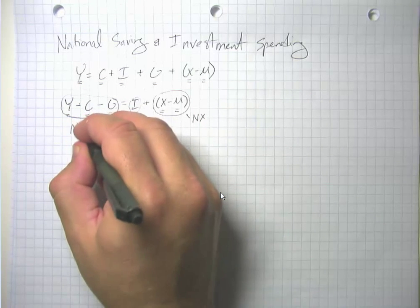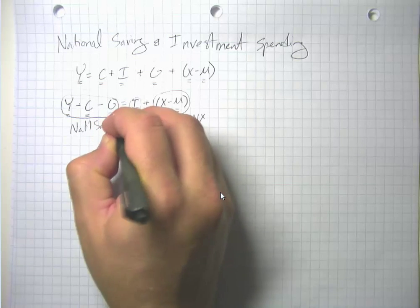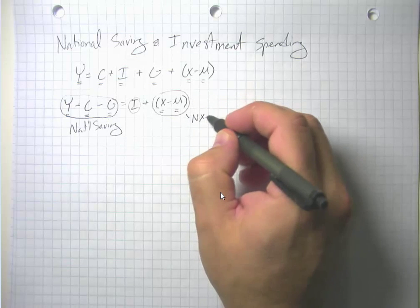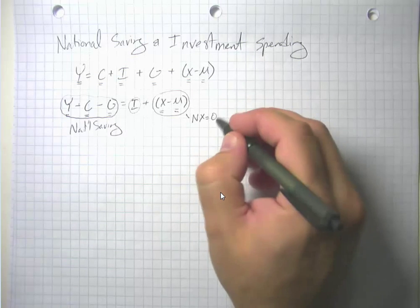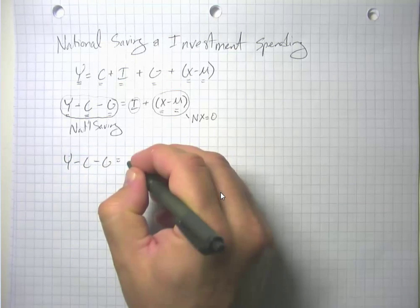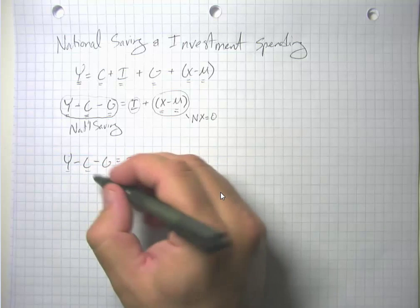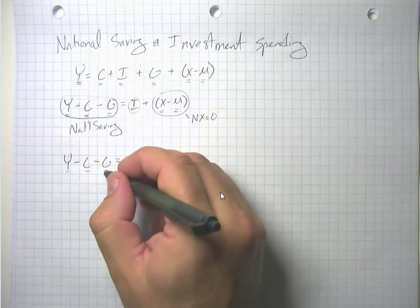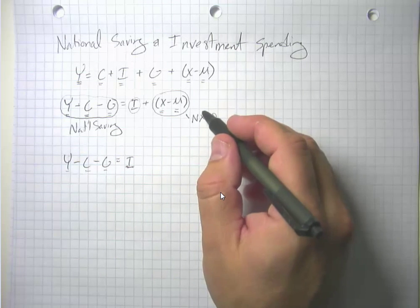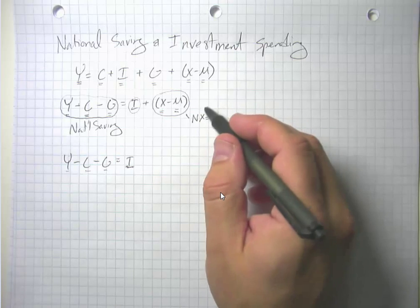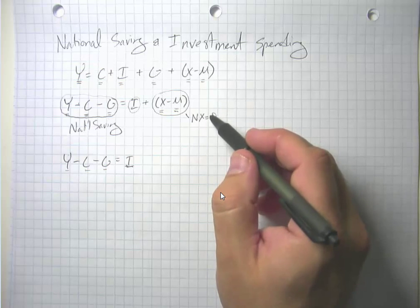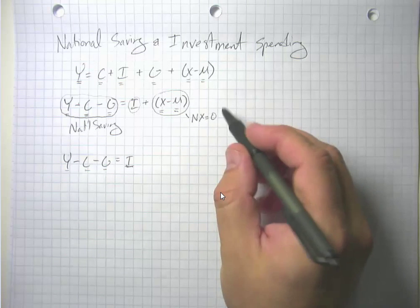This term that I've circled is what we call national savings. We're often going to assume that net exports equal zero, in which case this simplifies down to: what we've produced minus what we've consumed privately, minus what we've consumed through government, equals our investment spending. That's oversimplified since we do engage in international trade, but we'll set that aside for now.